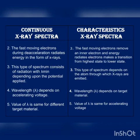Third point: continuous X-ray spectrum consists of radiation with a minimum wavelength (lambda minimum) depending upon the applied potential. Characteristic X-ray spectrum depends on the atom from which X-rays are emitted. Fourth point: for continuous spectra, wavelength depends on accelerating voltage; for characteristic spectra, wavelength depends on the target material.